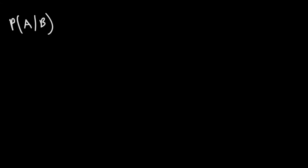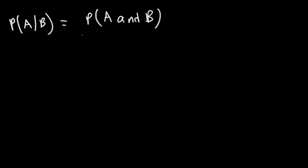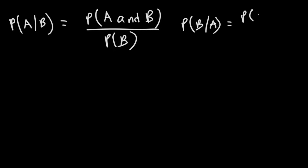The probability of event A occurring, given that event B has already occurred, is the probability that event A and B will occur divided by the probability that event B will occur. Likewise, we can say that the probability of B given A is equal to the probability of B and A occurring divided by the probability that event A will occur.